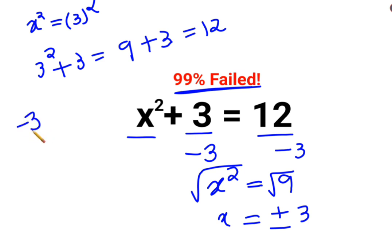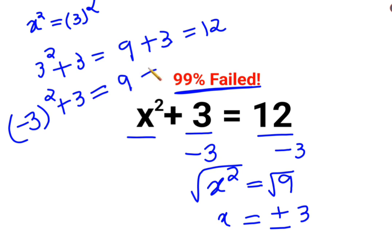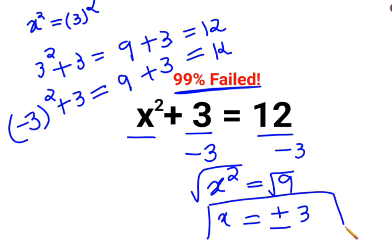Let's do minus 3 as well. So minus 3 squared — the square of a negative number always gives a positive value, so that becomes 9 plus 3, and we get 12 again. Therefore, the value of x in this question is plus or minus 3. I hope this is very clear to everyone.